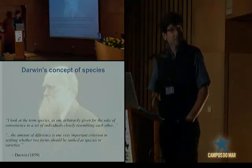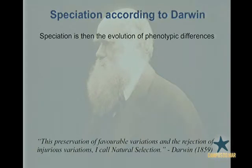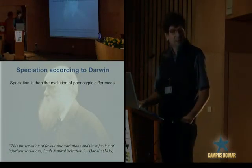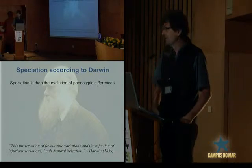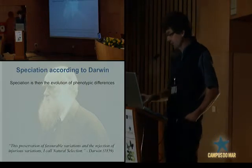Darwin stated: 'I look at the term species as one arbitrarily given for the sake of convenience to a set of individuals closely resembling each other.' So his definition of species was phenotypic. Darwin appreciated that crosses between species often produced sterile offspring, but he didn't think sterility or inviability was reliable enough to use as a definition. In Darwin's world, speciation is the evolution of sufficiently many phenotypic differences that a taxonomist would describe them as separate species. Showing that natural selection is involved in speciation amounted to showing that natural selection is involved in phenotypic differentiation — and that's what Darwin's book is all about.